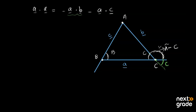یہ جو angle ہے یہ π minus c ہوجائے گا۔ اسی طرح a اور c کی بات کریں — اگر یہ b ہے تو یہ outer angle π minus b آجے گا۔ تو a اور c کے درمیان جو angle تھا وہ بھی ہم نے find کرلیا، اور a اور b کا angle بھی find ہوگیا۔